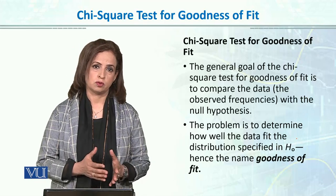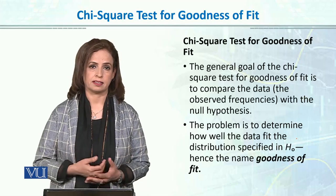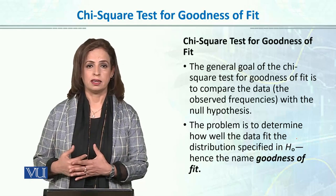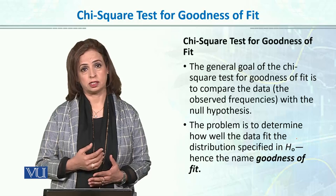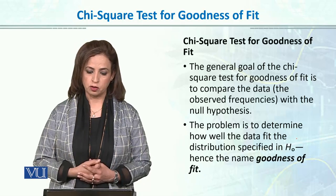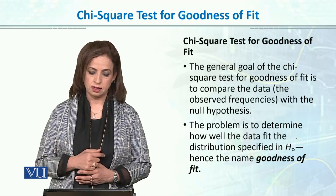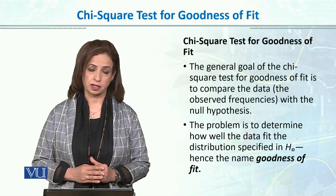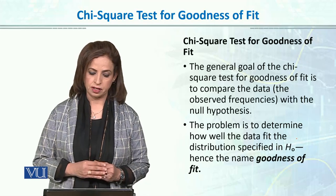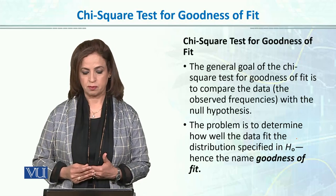Observed frequencies are those that come from our actual collected data. Expected frequencies are related to the null hypothesis — either equal frequencies or based on certain population proportions we have specified. The goal of the chi-square goodness of fit test is to compare the observed frequencies with the null hypothesis or expected frequencies, to determine how well the data fit the distribution specified in the null hypothesis — hence the name 'goodness of fit'.